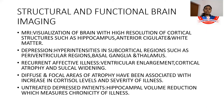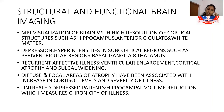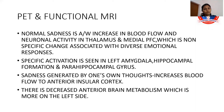Structural brain imaging: MRI provides high-resolution visualization of cortical structures such as the hippocampus and anterior cingulate. In depression, hyperintensities are found in subcortical regions like periventricular regions, basal ganglia, and thalamus. In recurrent affective illness there is ventricular enlargement, cortical atrophy, and sulcal widening. Diffuse and focal areas of atrophy have been associated with increased cortisol levels and severity of illness. Untreated depressed patients show hippocampal volume reduction, which measures chronicity of illness.